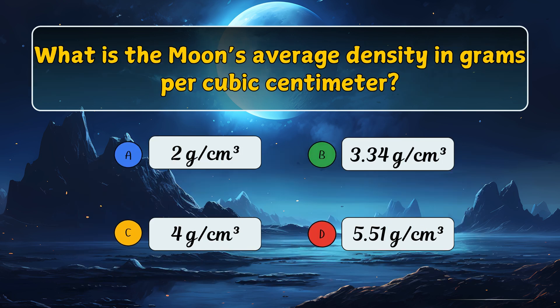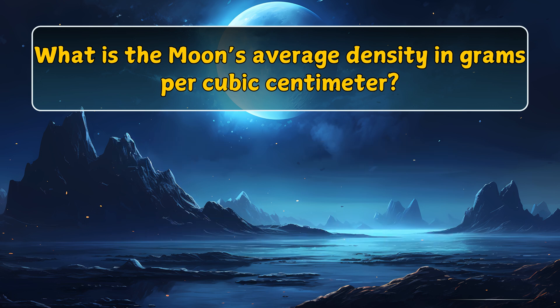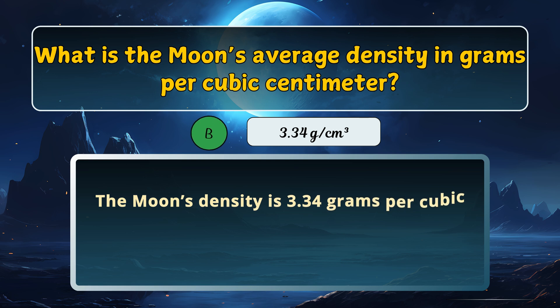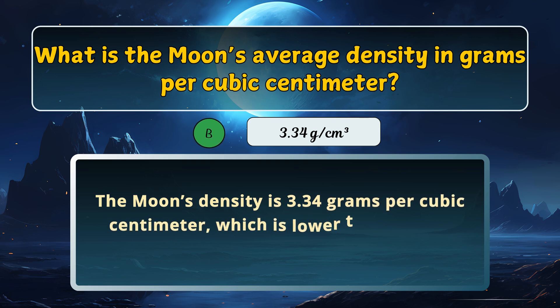What is the moon's average density in grams per cubic centimeter? Here is the answer: 3.34 grams per cubic centimeter.